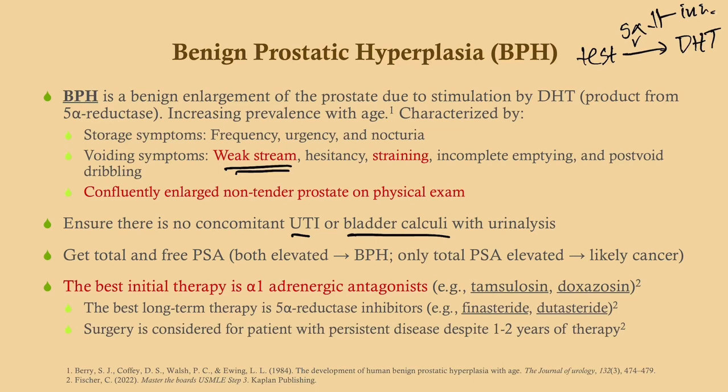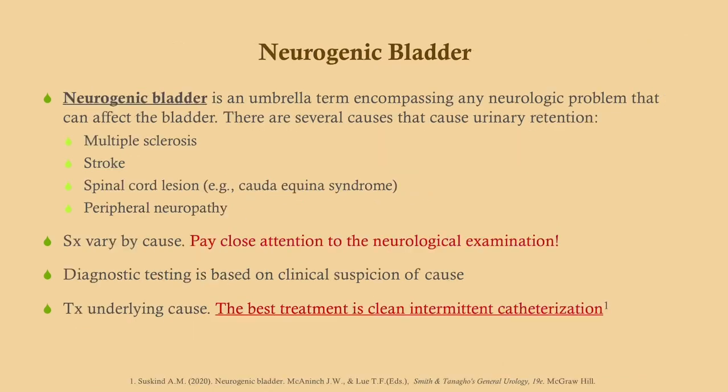Surgery is considered for patients with persistent symptoms despite maximal medical therapy. Neurogenic bladder is an umbrella term for any neurologic problem interfering with bladder function. A spasmodic bladder causes urinary urgency; a flaccid bladder causes urinary retention, which leads to post-renal failure. Look for neurologic etiologies: MS, stroke, spinal cord lesion (particularly cauda equina syndrome), and peripheral neuropathy typically related to uncontrolled diabetes.